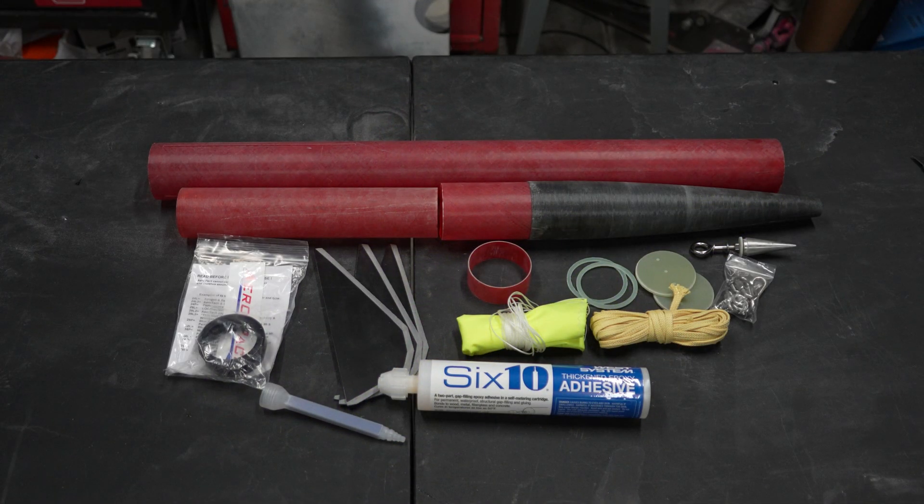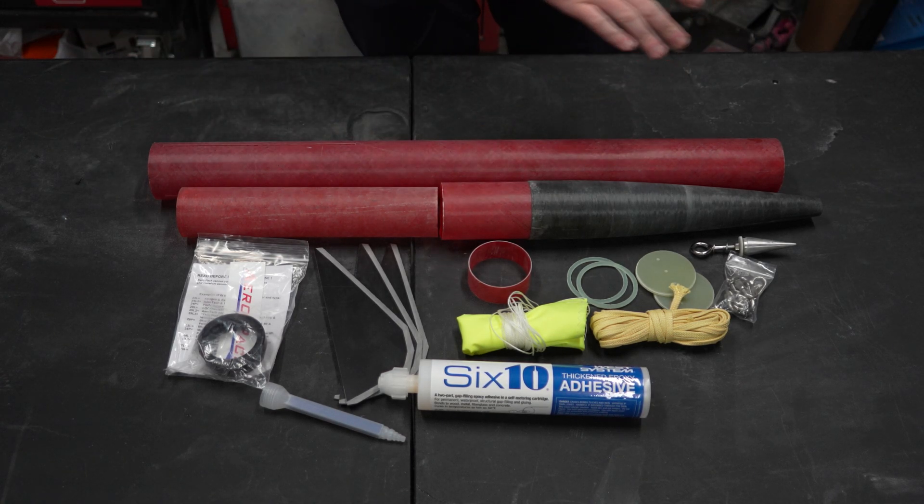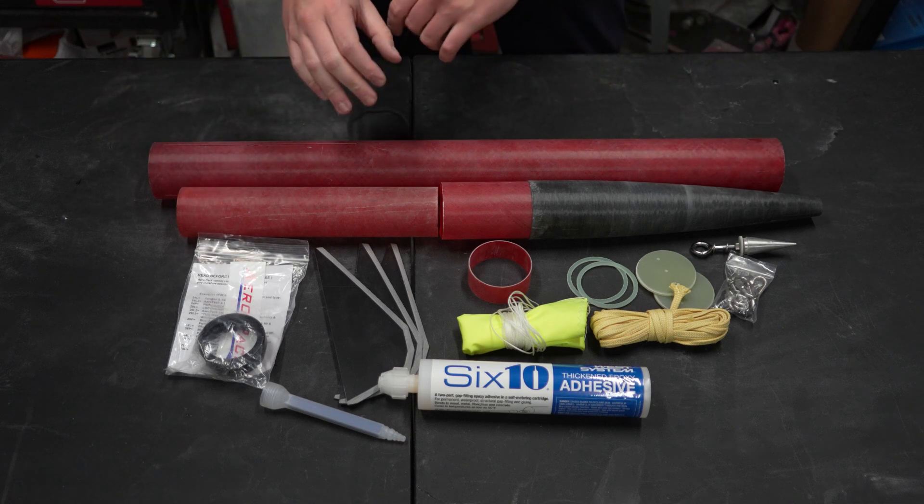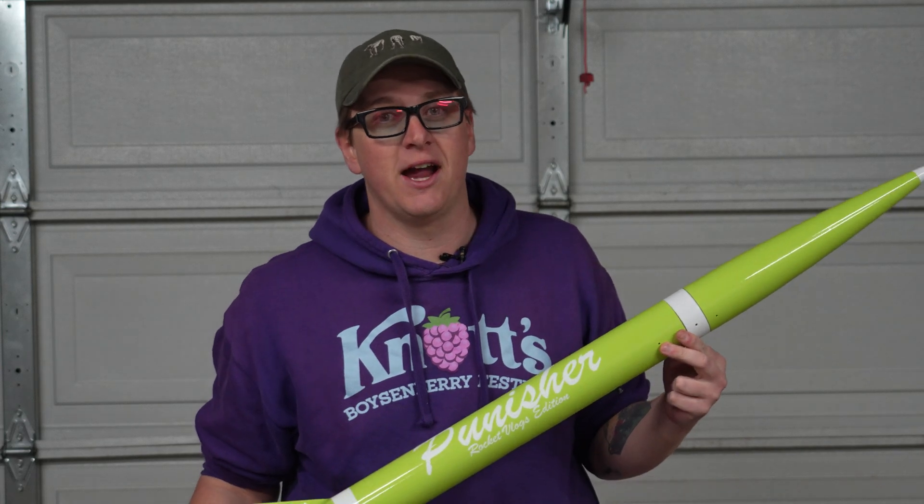Better still is the fact that Wildman is offering this rocket as a complete package including parachute, shock cord, an aeropack retainer, rail buttons, quick links, eye bolts, and even a tube of West 610 epoxy. So you have pretty much everything you need to build and fly this rocket.